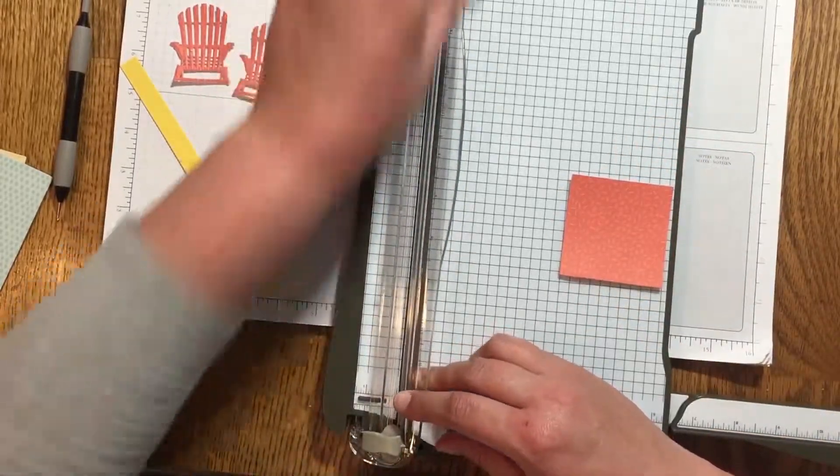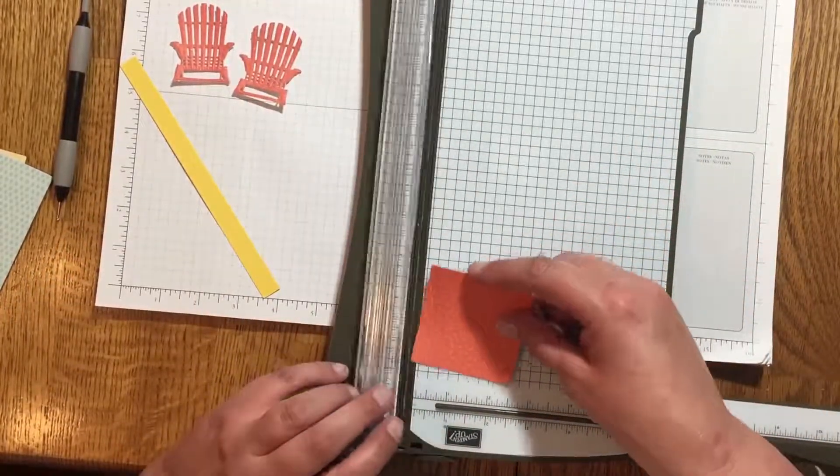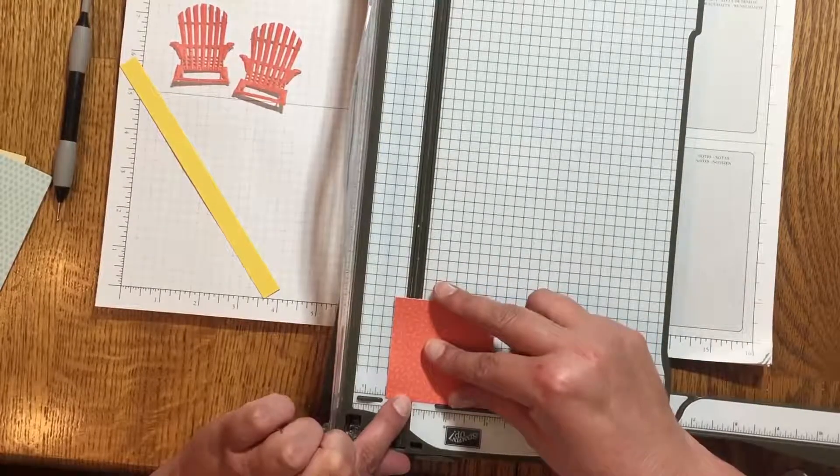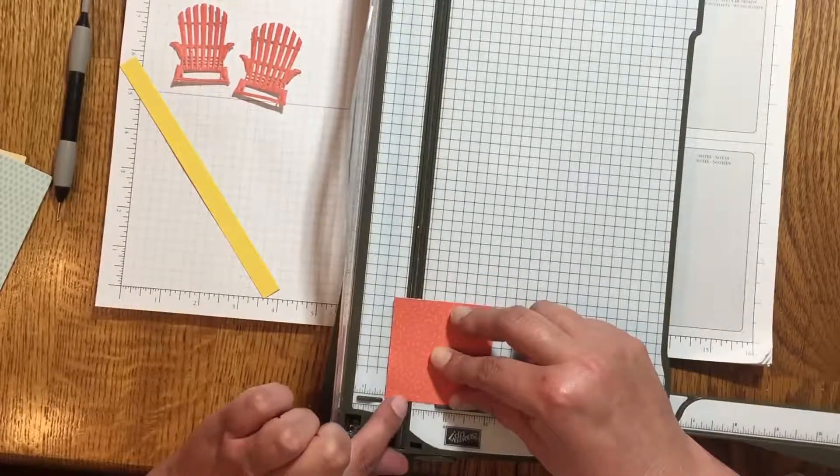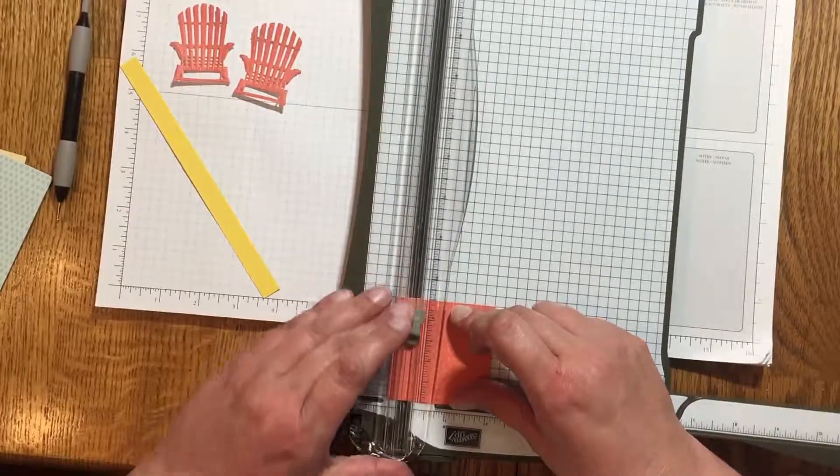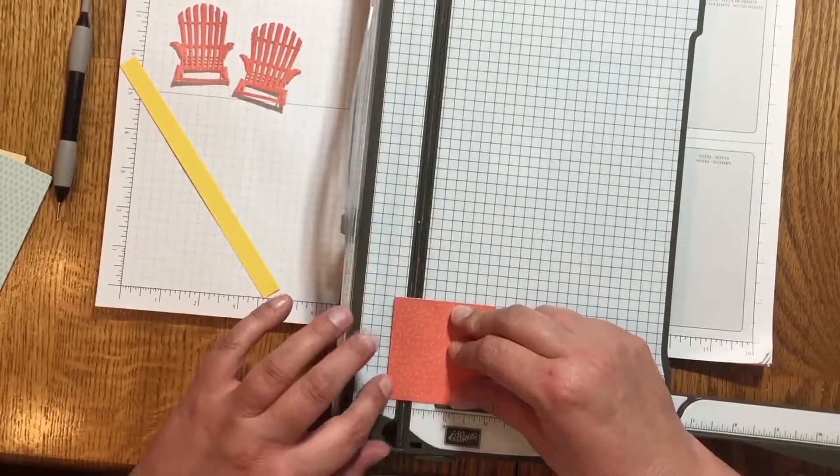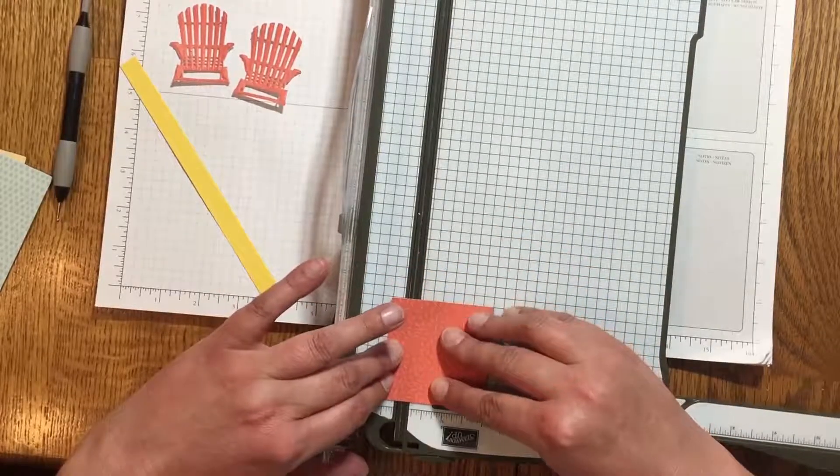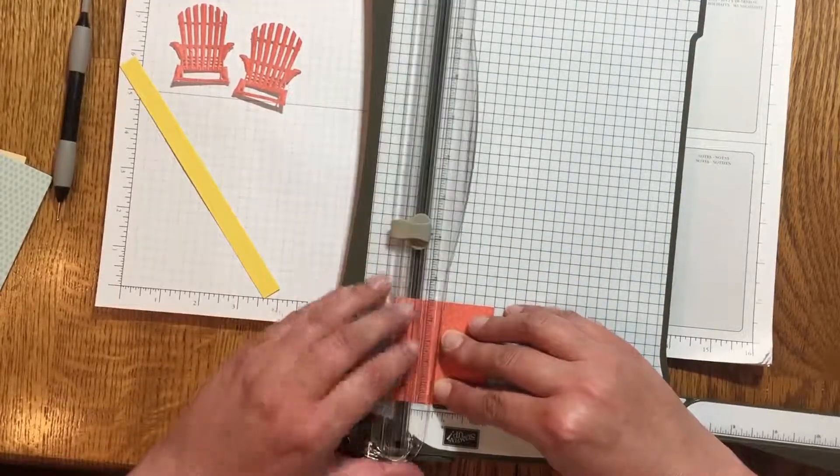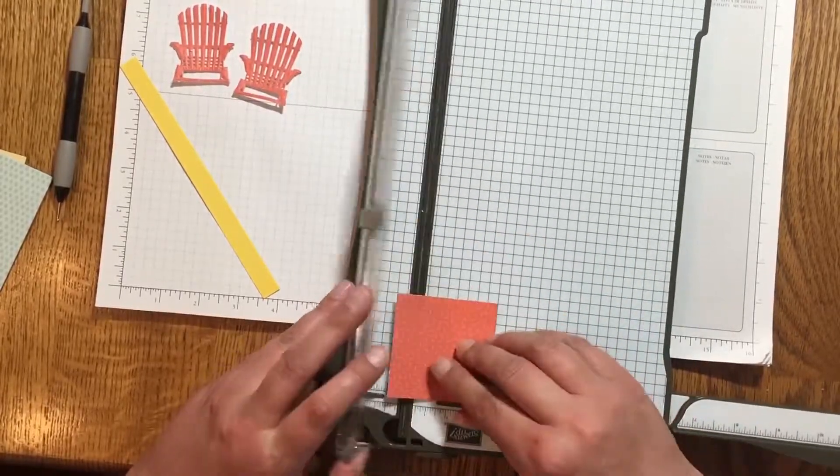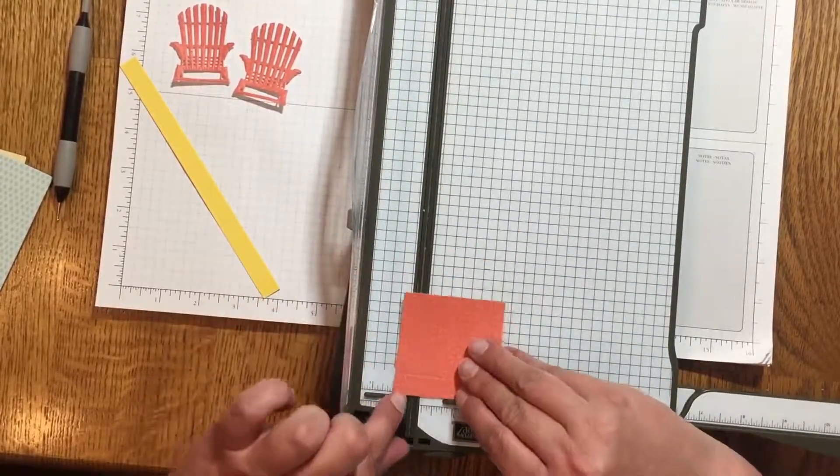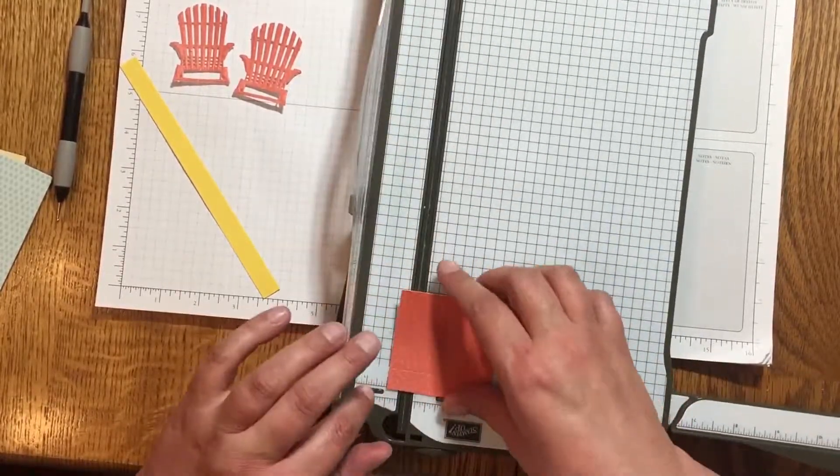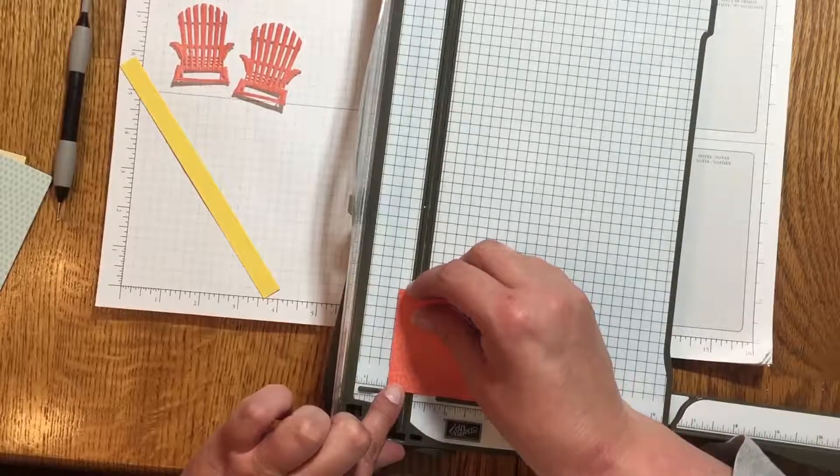Now grab the square cardstock piece that you cut for the basket base and you're going to score it one half inch in from each of the four sides. I'm using my Stampin' Up trimmer which also has a scoring blade, and I'm just aligning each side at the half inch mark and then scoring and then rotating to the next side, realigning and scoring again until I get that half inch score line on all four sides of the square.